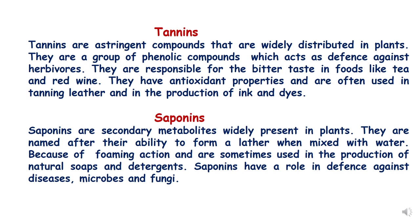Saponins are secondary metabolites widely distributed in plants, named after their ability to form foam or lather when mixed with water. Because of this foaming action, they are sometimes used in the production of soaps and detergents used in herbal cosmetic products. Saponins also have a role in defense against diseases, microbes, and fungi.